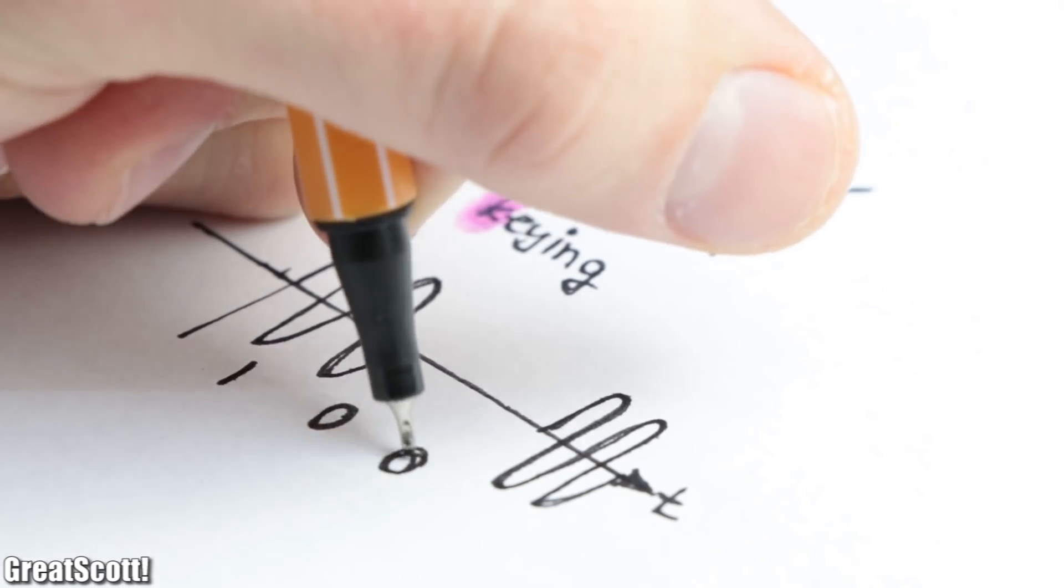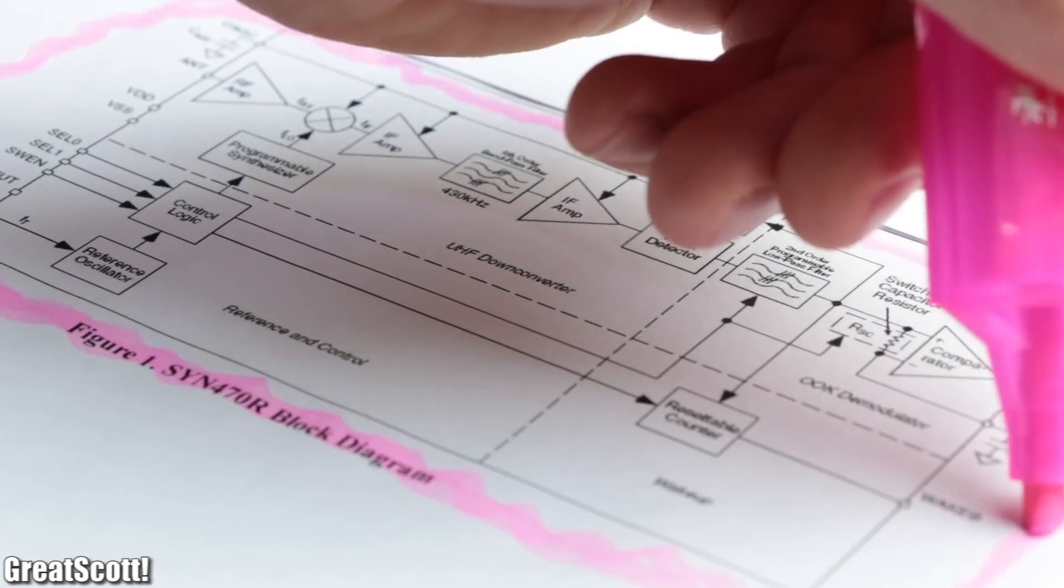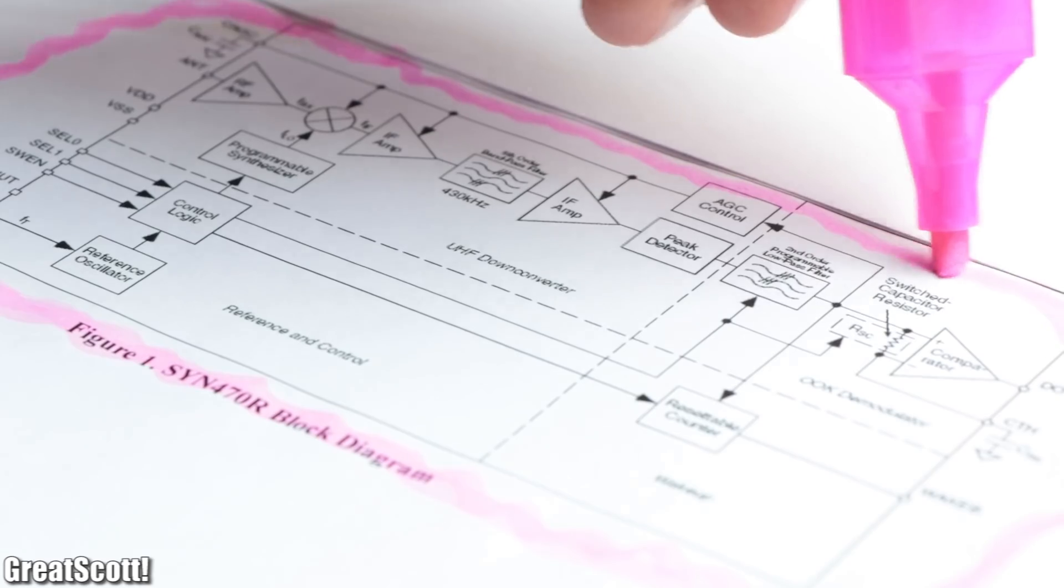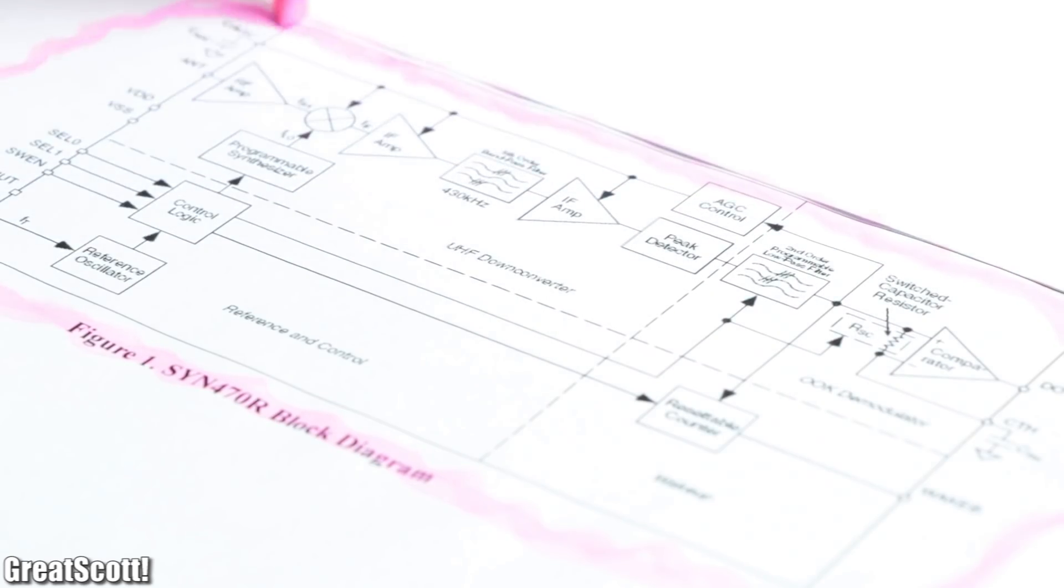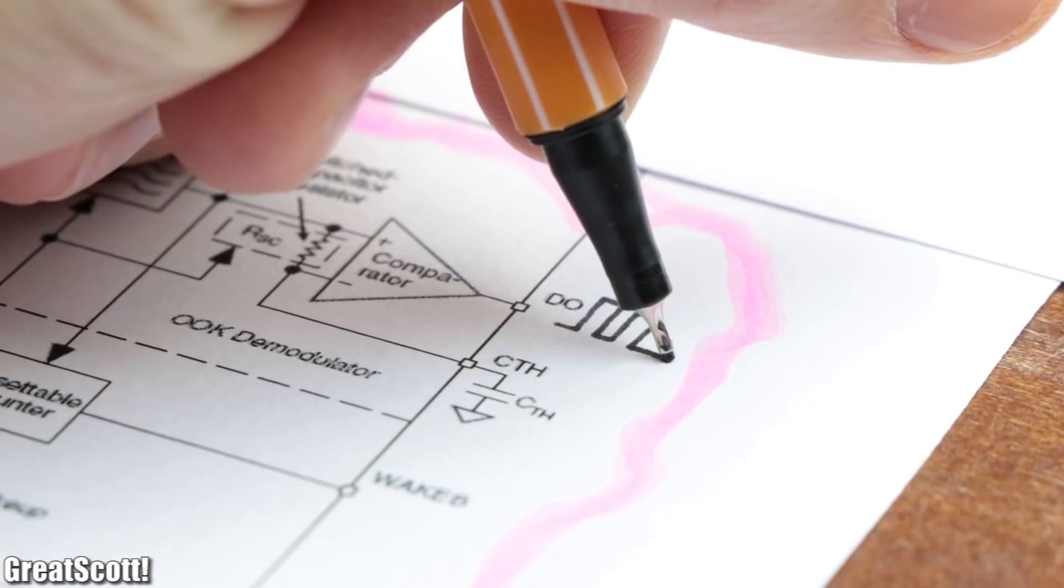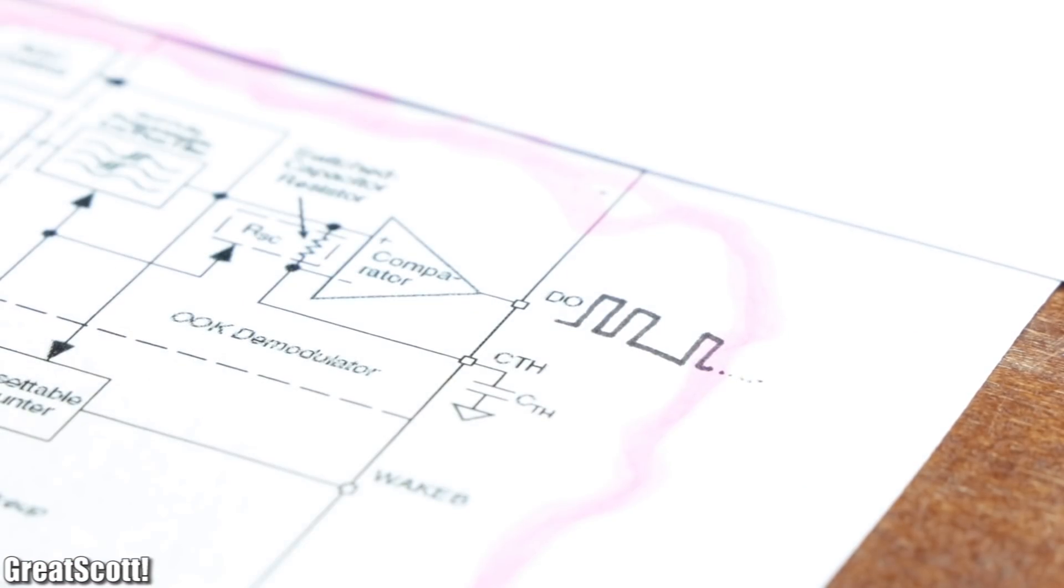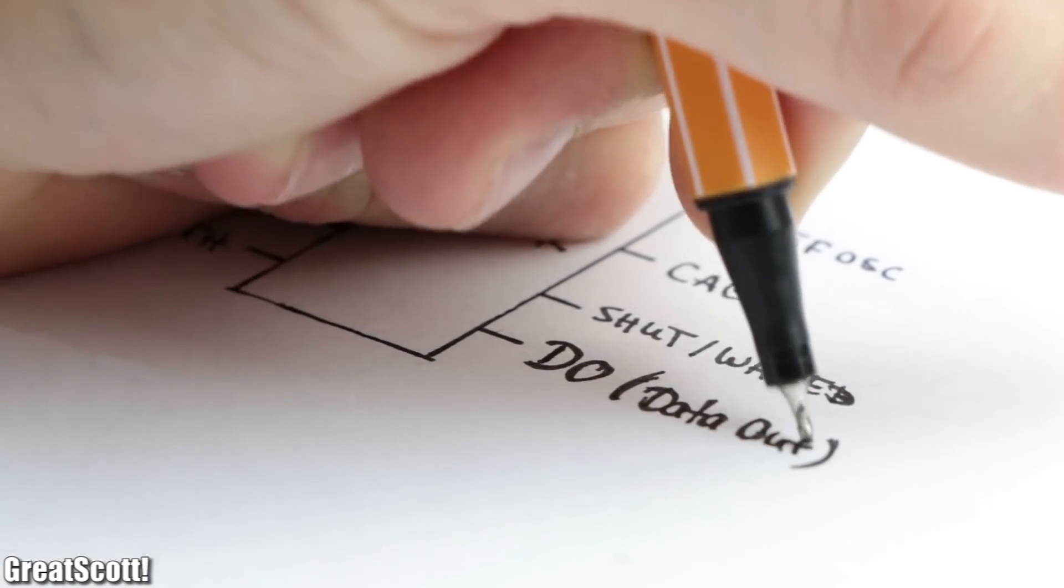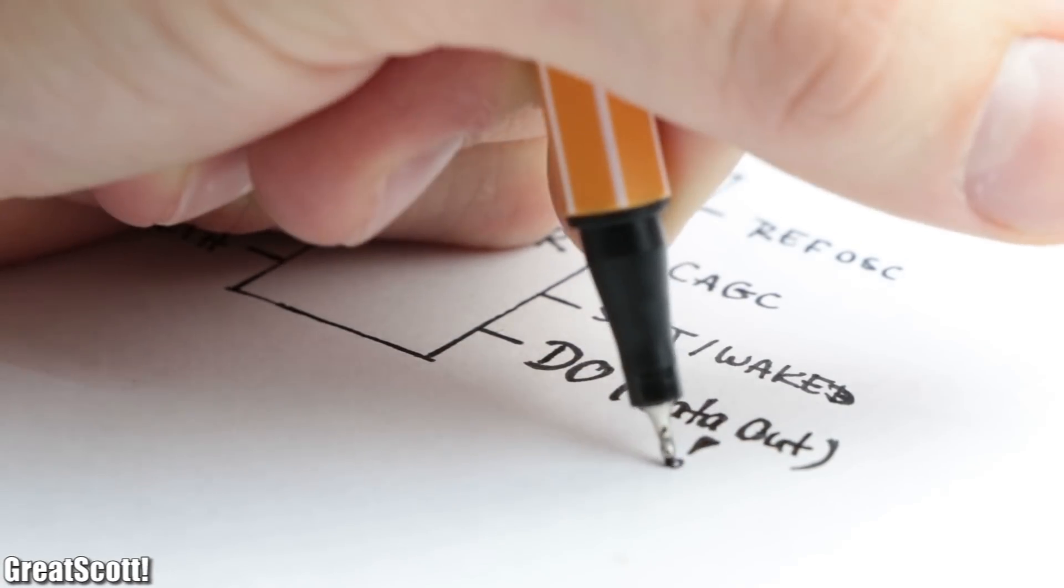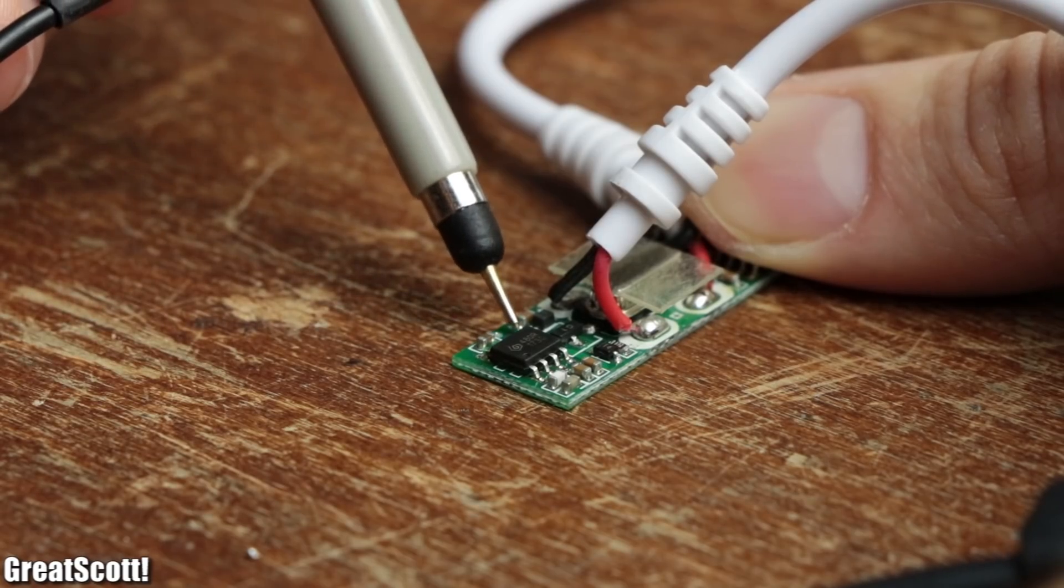But right now we do not care that much about this technical principle as well as the more or less complicated functional diagram of the IC which in a nutshell picks up the modulated RF signal and turns it into a proper data signal that we can work with. For now we only care about the cleaned up data signal on pin 5 of the IC at which I immediately had a look at with my oscilloscope.